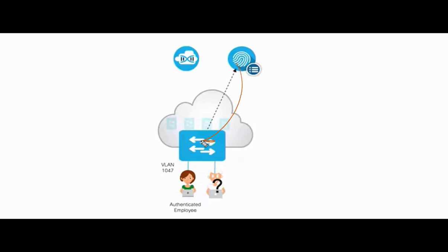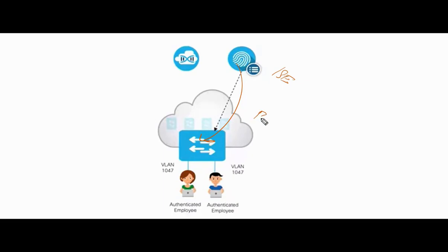When the RADIUS server comes back online, the users in the Critical VLAN are re-authenticated back to their original VLANs.